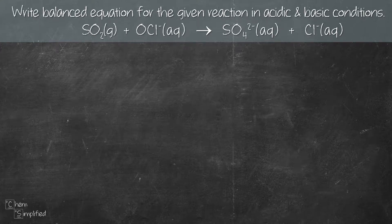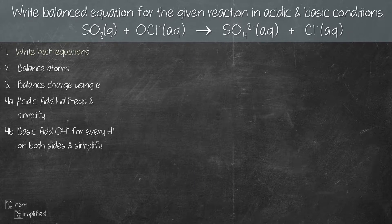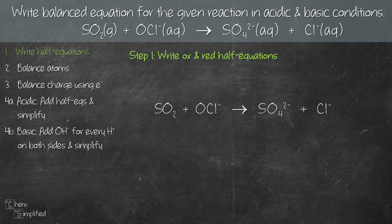We're going to write a balanced equation for the given redox reaction in both acidic and basic conditions using these four simple steps. First step, we have to write out the half equations, and before we can do that we need to figure out which is an oxidation half equation and which is a reduction half equation. To do that we're going to use oxidation numbers.